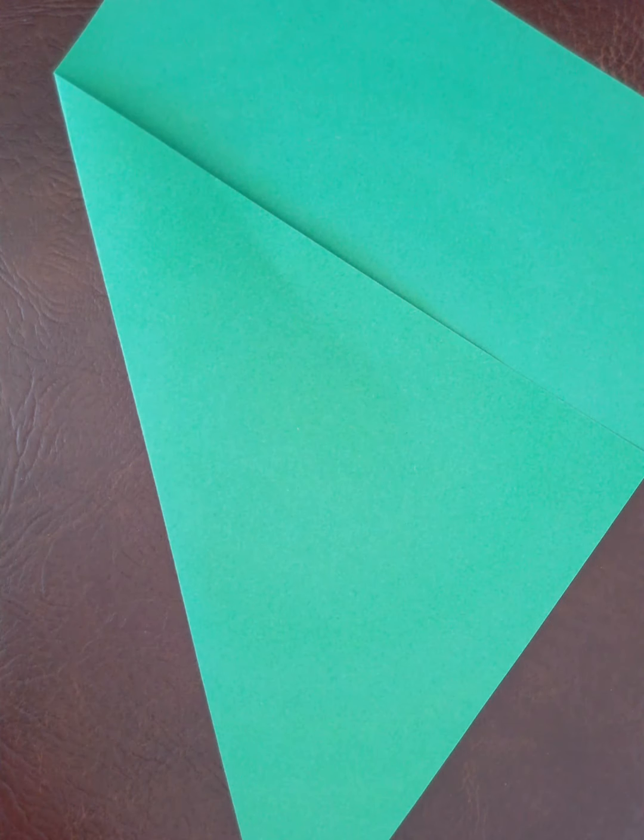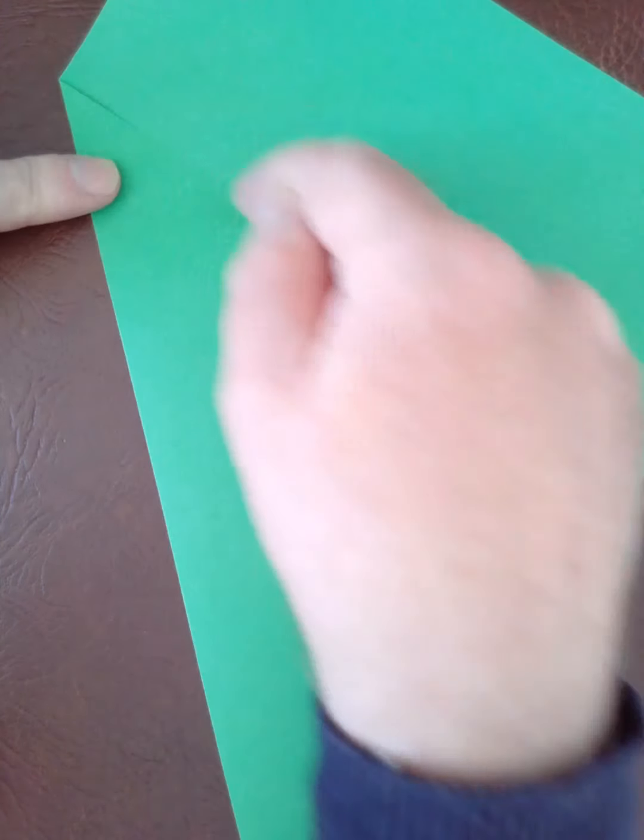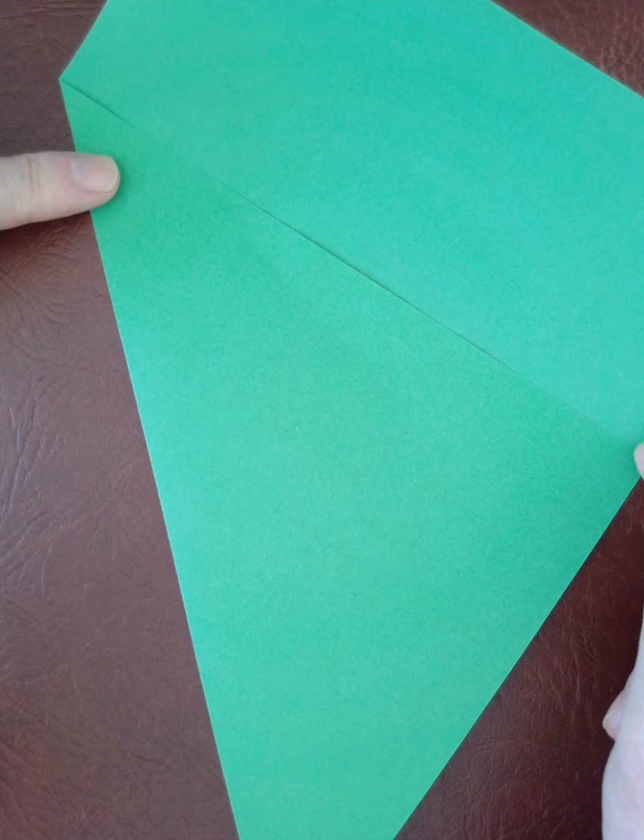Okay, so this is a slightly harder frog to make now. So again, if we want a square piece of paper, just start with a normal piece of paper, fold it across and then cut very carefully along that line and then you'll have a square.